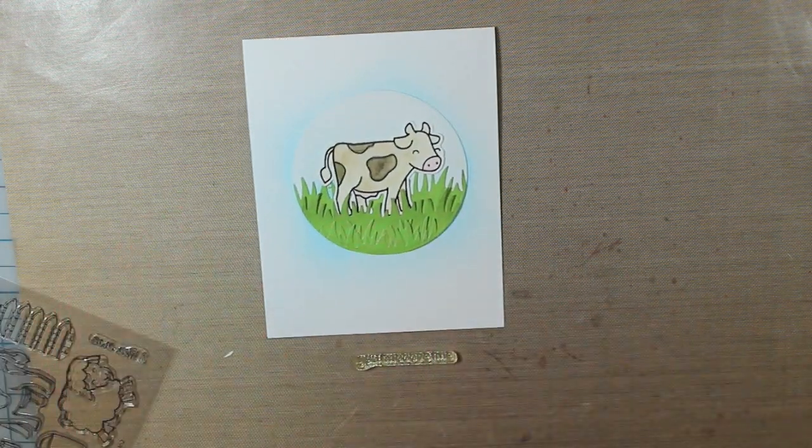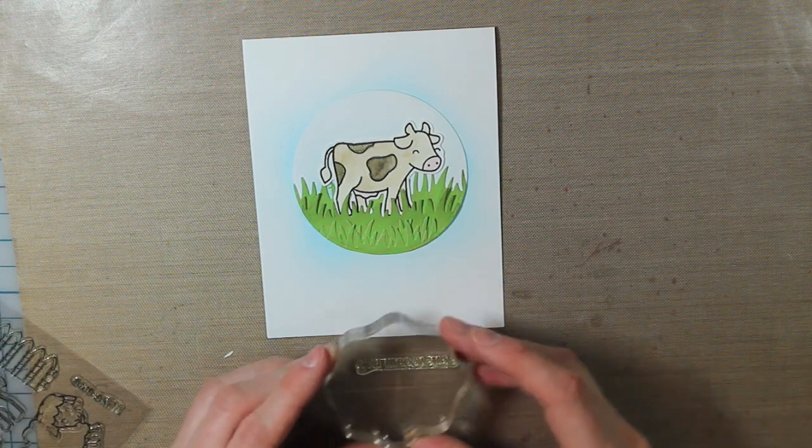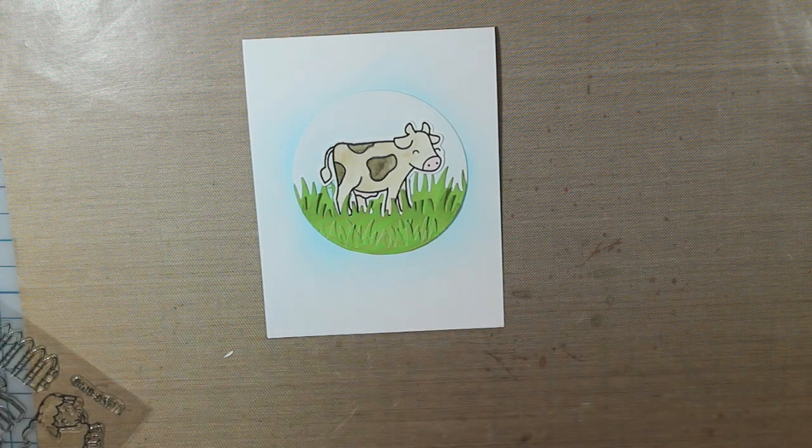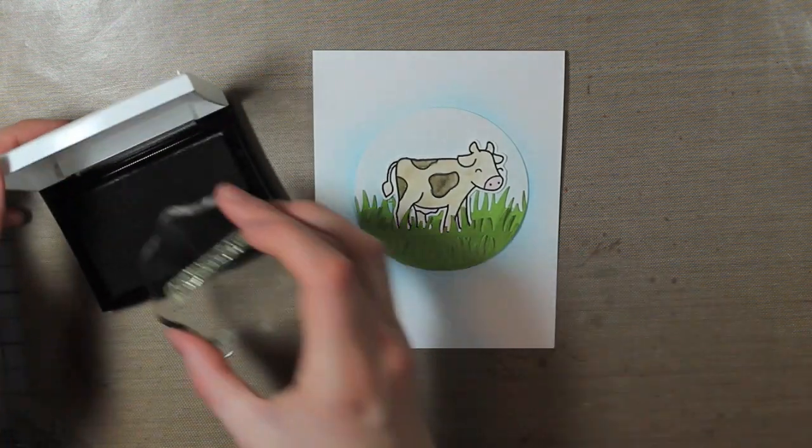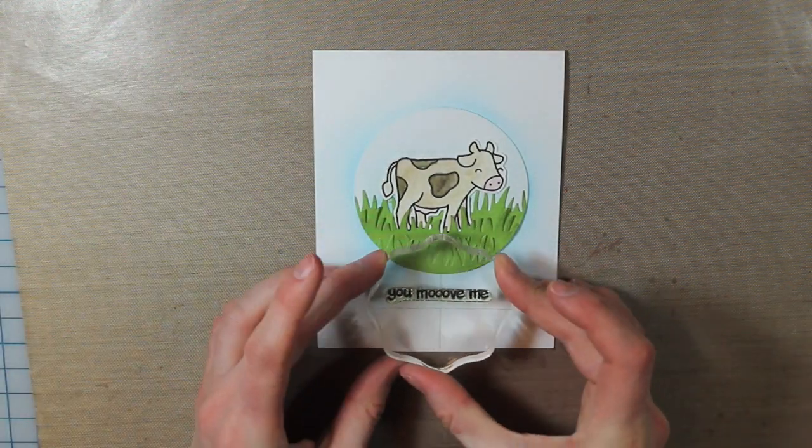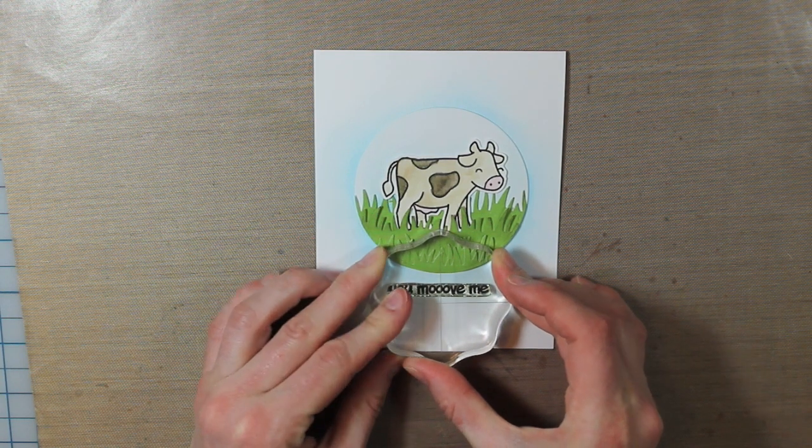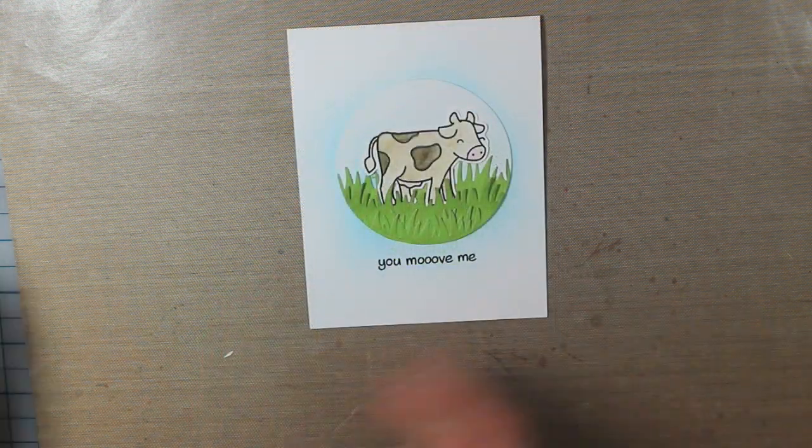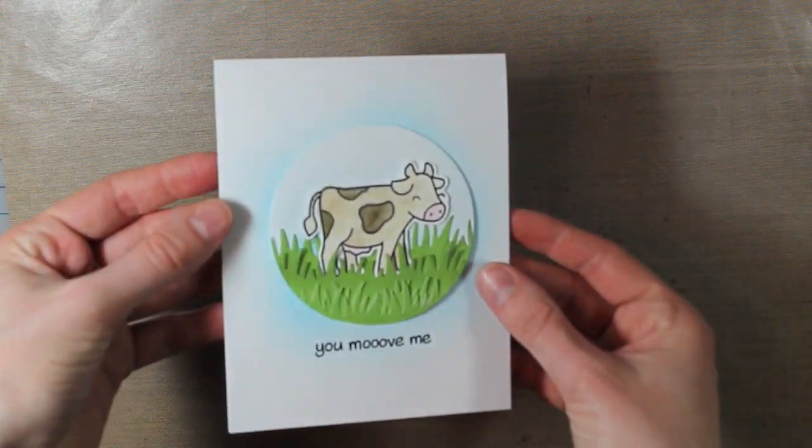Now I'm going to go ahead and stamp my sentiment. And I am stamping that with the same ink that I stamped the cow with, the VersaFine Onyx Black, just to make sure that all of my black inks match on my card. And then that is my finished card for today.